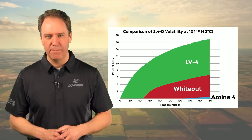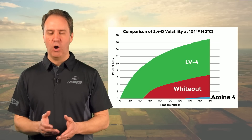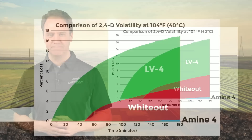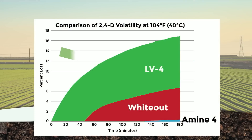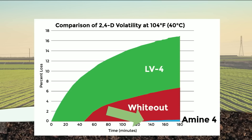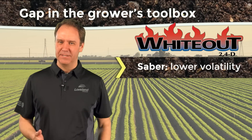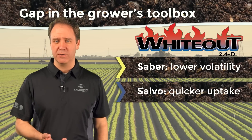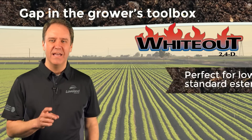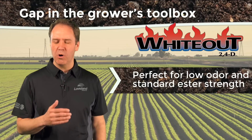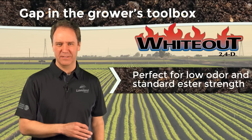To prove how WhiteOut offers a less volatile formulation over a standard LV-4 ester, we used a lab instrument that measures the weight of a droplet over a 3-hour period in high temperatures. In this diagram, we see that a droplet of standard ester begins to volatilize immediately, while the droplet of WhiteOut takes nearly 50 minutes before we see any loss. As expected, the amine droplet showed the lowest volatility. WhiteOut doesn't offer the lowest volatility like Sabre or the smaller particle size like Salvo, but it's perfect for those sensitive situations where low odor and standard ester strength is needed.